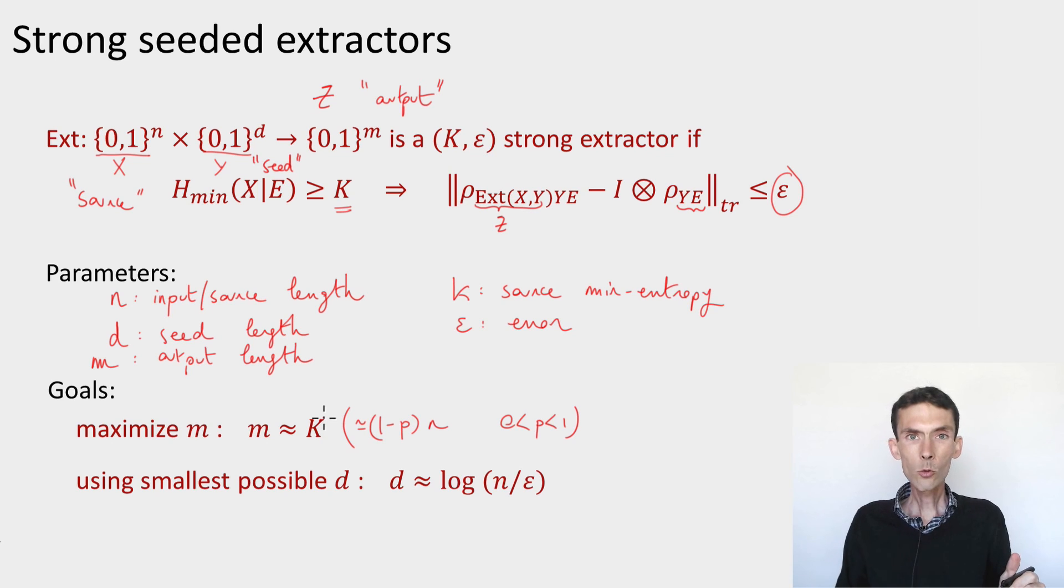And we'd like to do this in the strongest sense possible. So with the smallest possible error parameter epsilon. And then for a given epsilon, which ideally would be exponentially small in the source length, or at least in its min entropy, we want to have the smallest possible seed length.